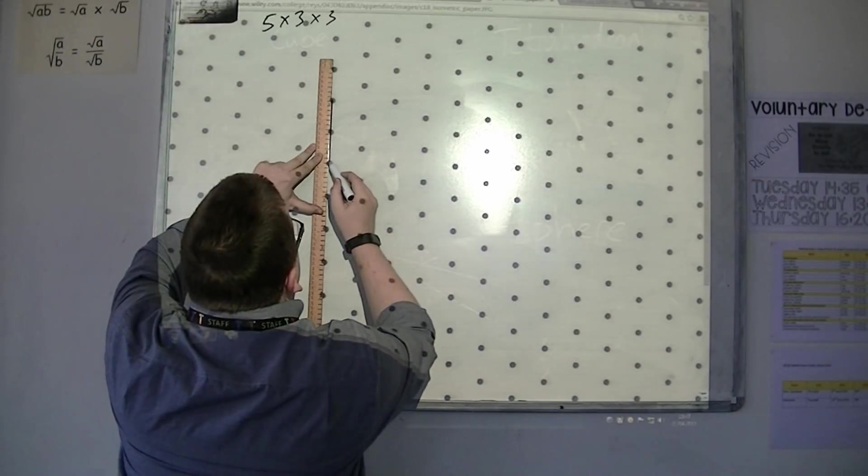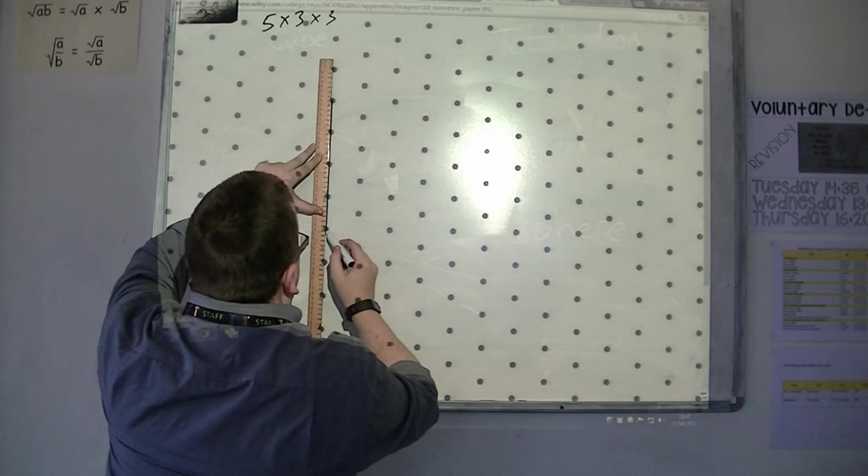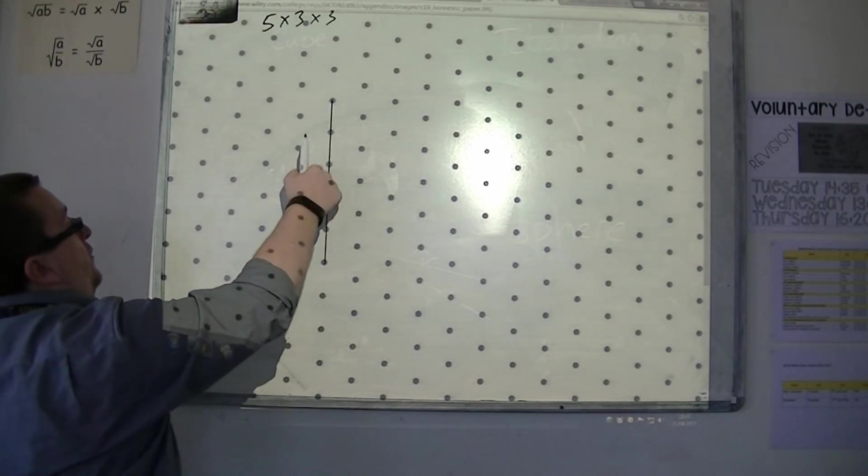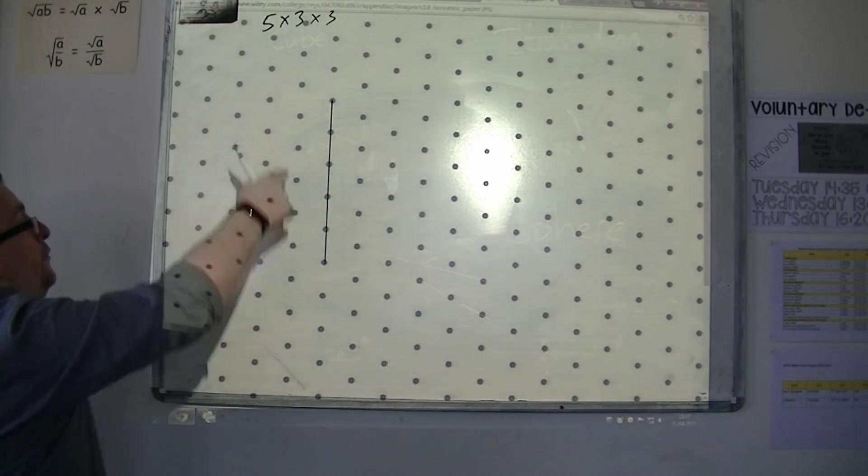So, it's 5 centimeters. So, 1, 2, 3, 4, 5. So, it's 5, so I'm going to take each one of these spaces to be a centimeter. So, it's 5 down.